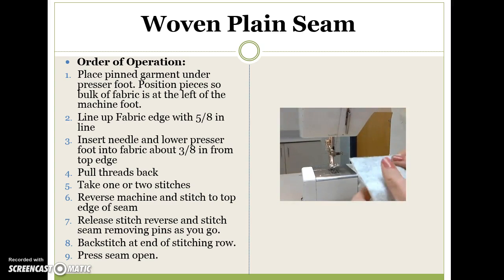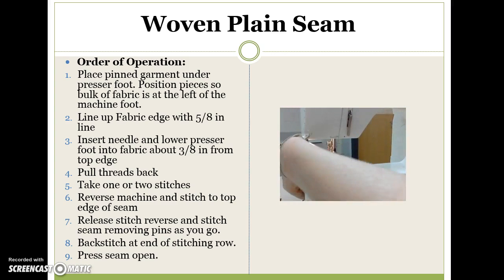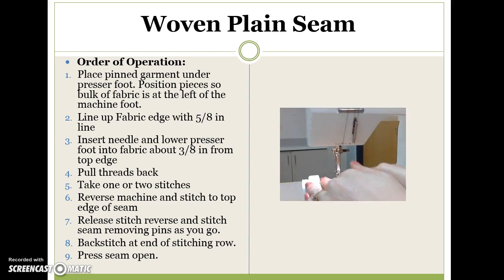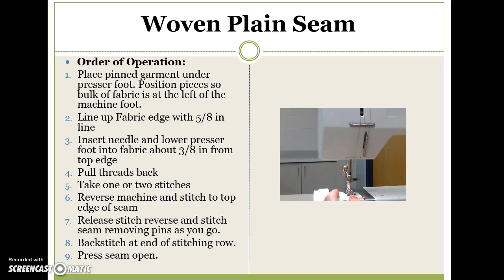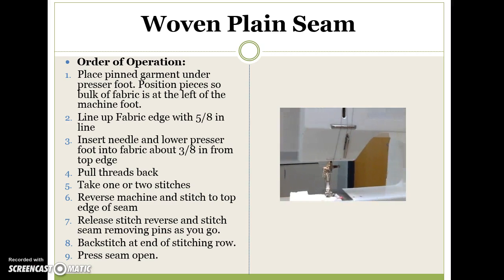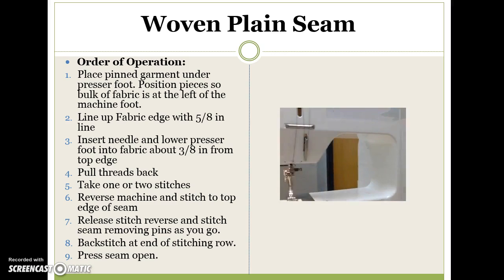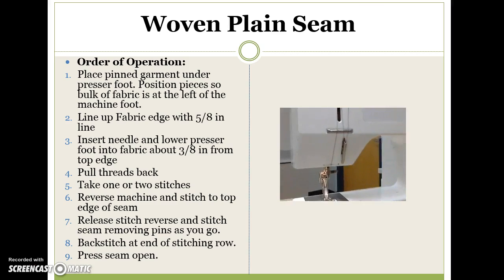We have our fabric pinned together and we are going to put it at that five-eighths inch line. Pull the needle back up — always turn the handwheel towards yourself, not away. Move the fabric until the needle goes right into the edge of the fabric. Pull your threads back, put your presser foot down, stitch two to three stitches, then using the reverse knob, lift it up until you get back to the edge of the fabric, and then let go and continue on. This is the backstitch, and it's important to backstitch in order to secure your seam.